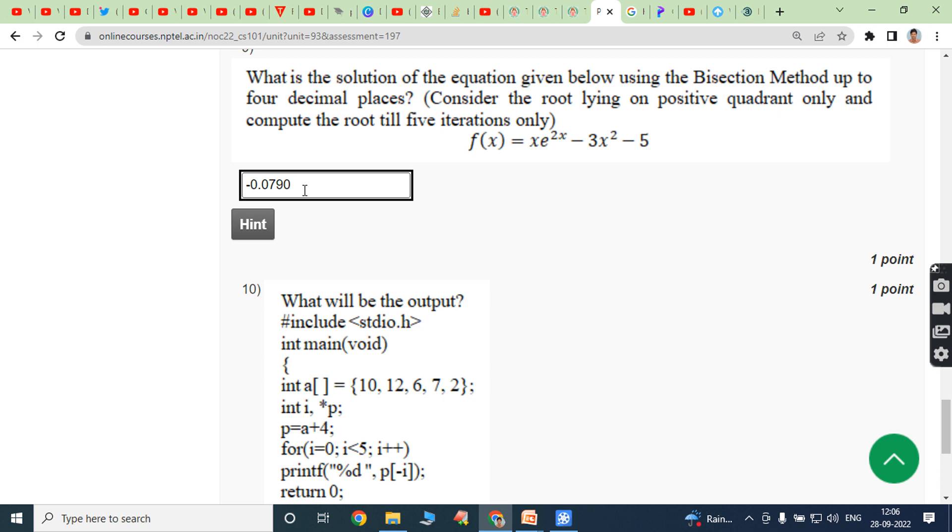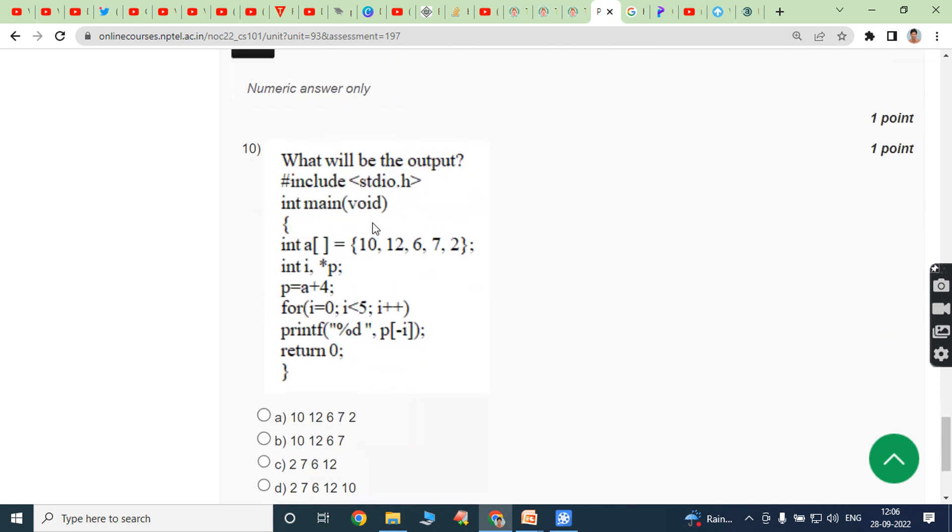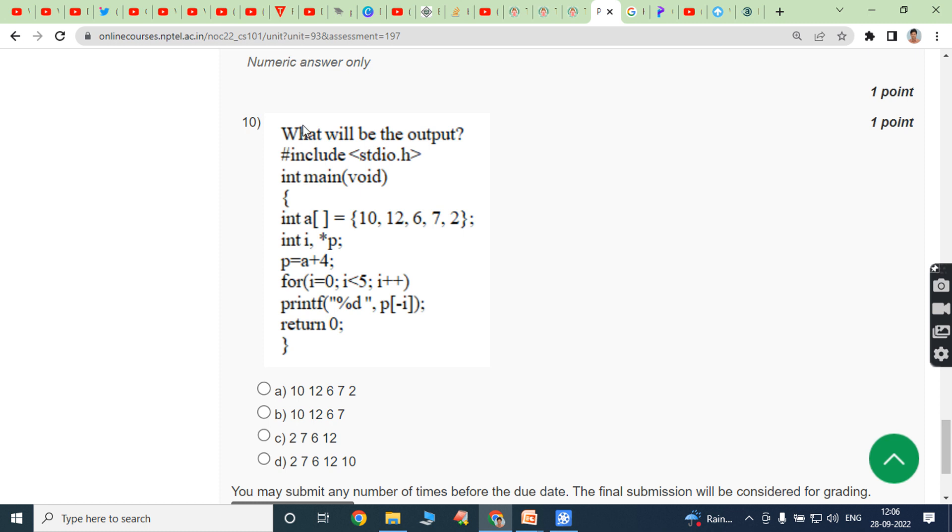Next one, 10th bit: What will be the output of the following program? In the main function, int a equal to array of 10, 12, 6, 7, 2. Int i, star p. P equal to a plus 4. For i equal to 0, i less than 5, i plus plus. Printf percentage p of minus i.